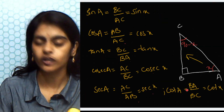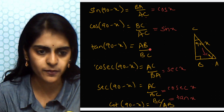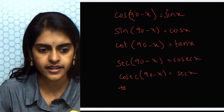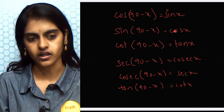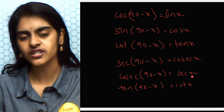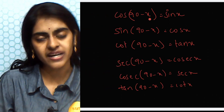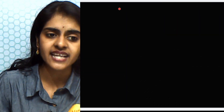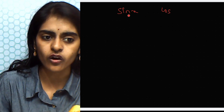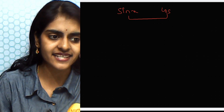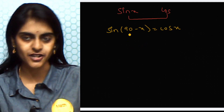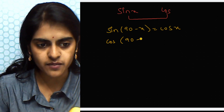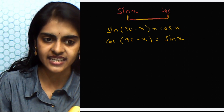Secant x = AC/AB. In the (90° − x) column, cosecant(90° − x) = AC/AB. So cosecant(90° − x) = secant x. And cot x = AB/BC. In the (90° − x) column, tan(90° − x) = AB/BC. So tan(90° − x) = cot x. Let me summarize: sine and cosine are complements of each other — sin(90° − x) = cos x and cos(90° − x) = sin x.